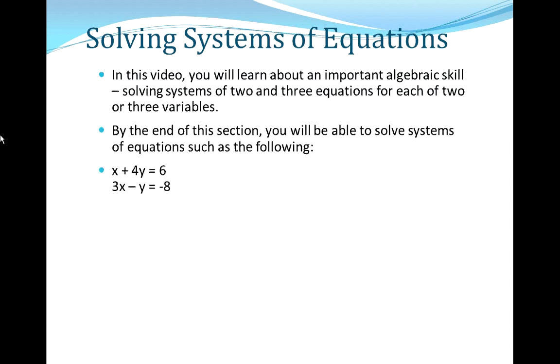x plus 4y equals 6, 3x minus y equals negative 8. And for a system in three variables, we add in z, so here we have three equations and three unknowns.